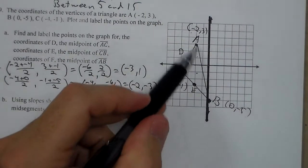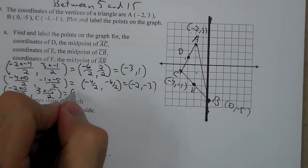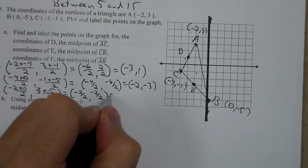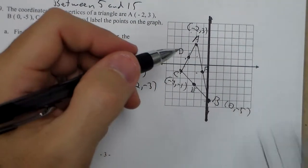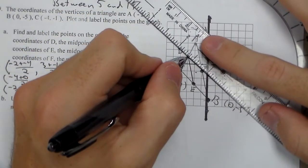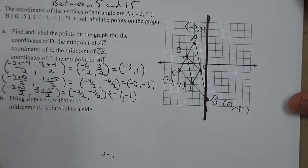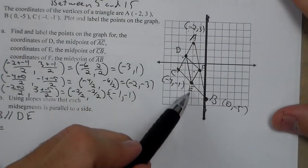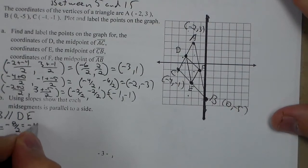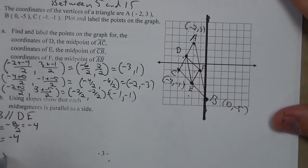Finally, we have F, which is the midpoint of A and B. So we're going to go negative 2 plus 0 over 2, and 3 plus negative 5 over 2. Negative 2 over 2, negative 2 over 2. It looks like we have negative 1, negative 1, which is our point here for F. So when I draw in my midsegments, it says I need to show using slopes that each midsegment is parallel to a side. So we should have that AB is parallel to DE. So our slope of AB, if we look at AB, it goes down 8, 2 to the right. So that would be negative 8 over 2, or negative 4. Our slope of DE goes down 4, 1 to the right. So that's negative 4 as well. That confirms they're parallel.